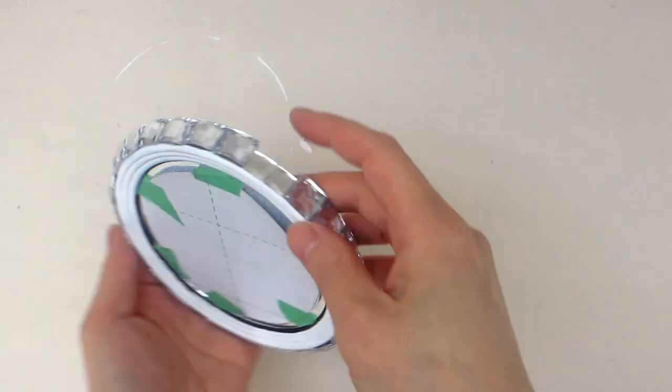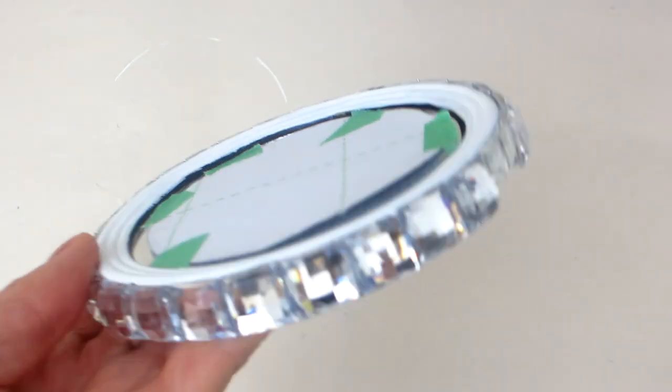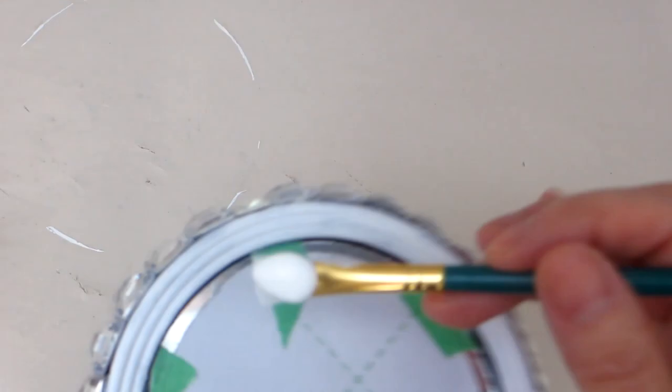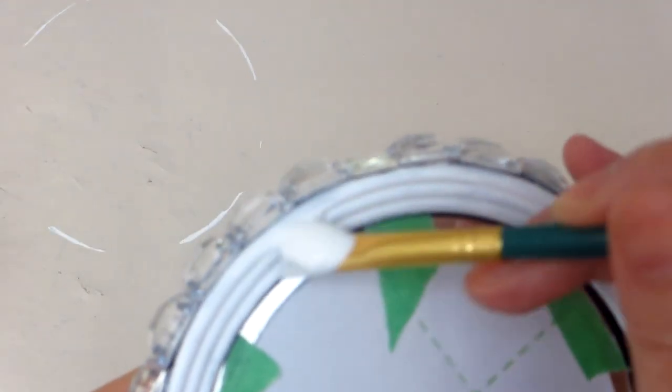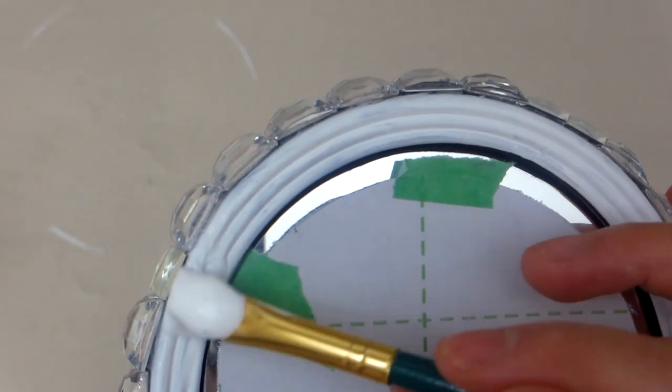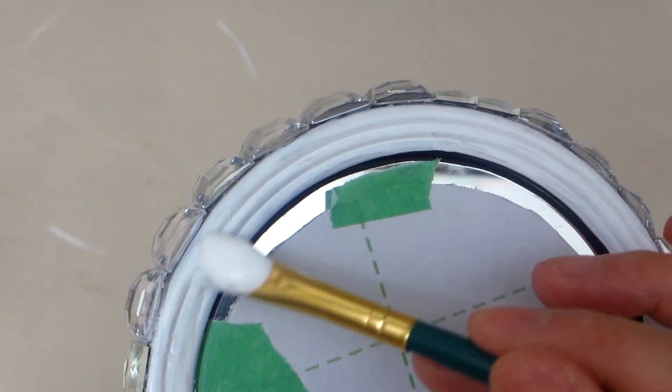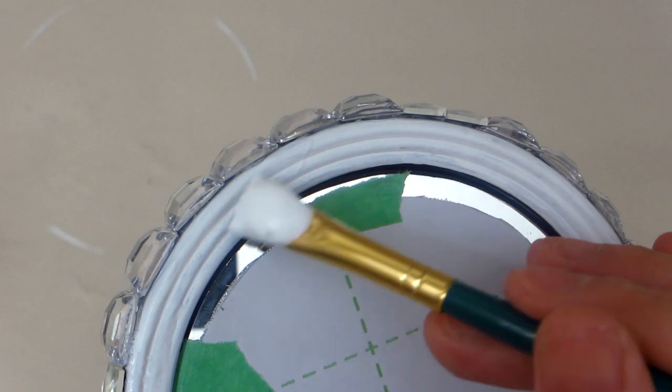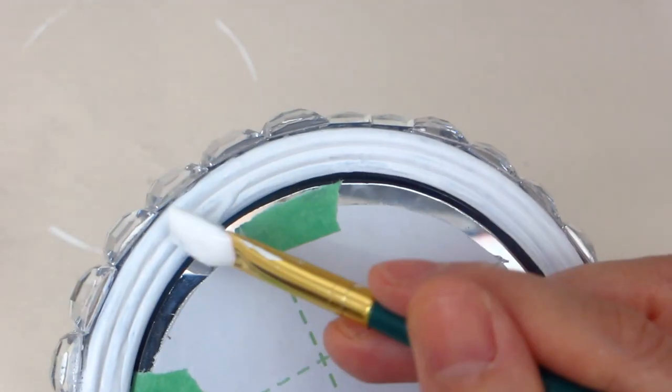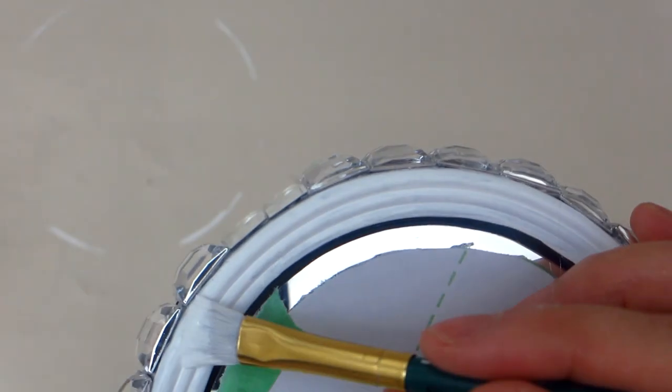And here is what the base looks like so far, but we're not done yet. Take a small paintbrush and apply a generous amount of Mod Podge to the top of the mirror frame where the paint has dried. This is where we are going to apply the white vase filler to. You can apply as much or as little as you prefer. I'll be applying a generous amount so that it looks like freshly fallen snow.